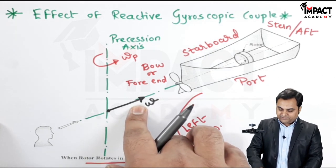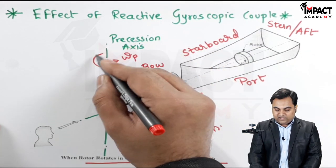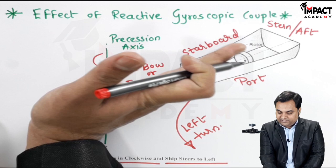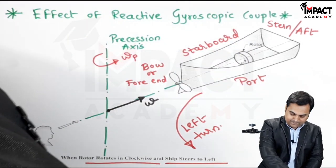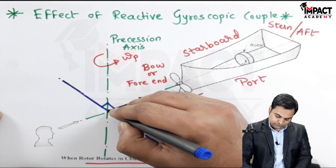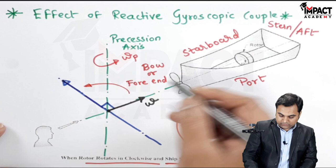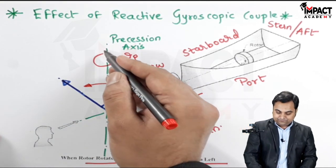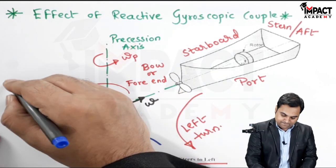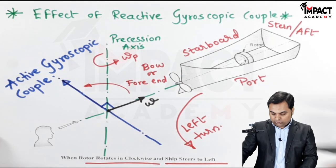To determine the gyroscopic effect, the vector of omega would be tilted by 90 degrees in a direction similar to omega p. Looking from the top, omega p is rotating in an anti-clockwise direction, so omega needs to be tilted in an anti-clockwise manner in that plane. When I tilt this omega along the direction of the angular velocity of precession — that is, the anti-clockwise direction looking from top — I get the active gyroscopic couple.